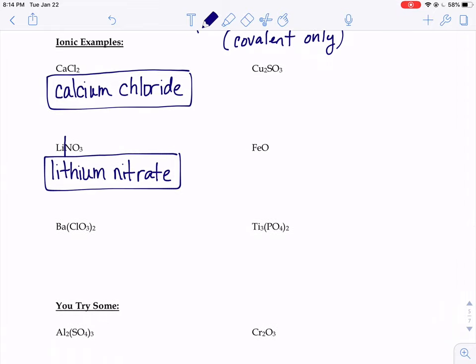How about that Ba(ClO3)2? So Ba, we'd have to say, what's that called? Barium. Next step.